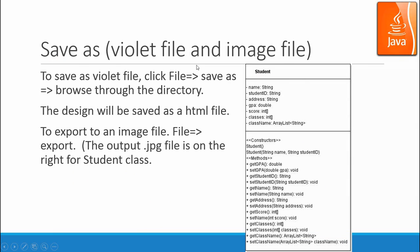After you finish, you can save the file by clicking File, Save As, and browsing through the directory to save it. The file will be saved as an HTML file. You can also export it by clicking File, Export, and saving it as a JPG or PNG file.